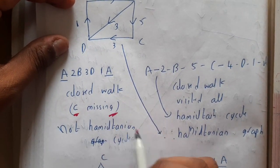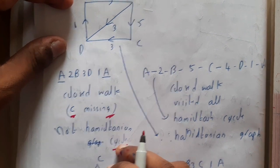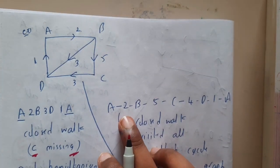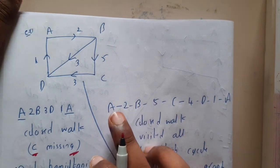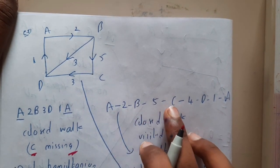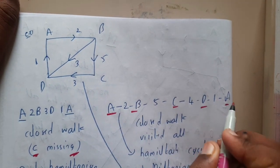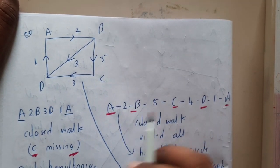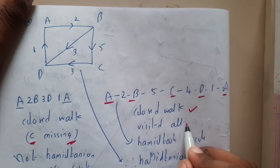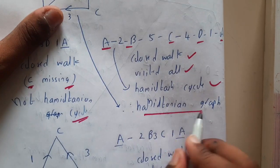Let us try one more: A to B, B to C, C to D, and D to A. If you observe here, we visited each and every vertex exactly once except the initial and final. It is a closed walk, visited all, and it has a Hamiltonian cycle. Hence you can say it is a Hamiltonian graph.